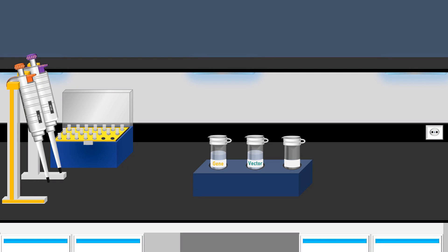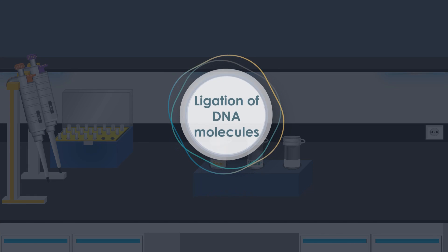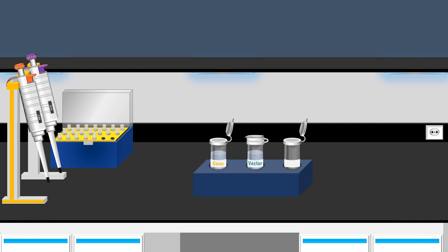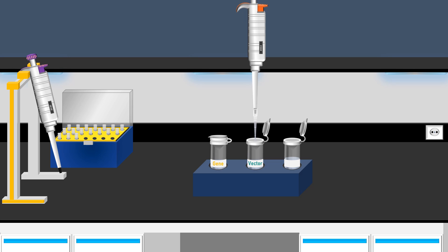After treatment with the restriction enzymes, the next step in the cloning process is the ligation of DNA molecules. For this purpose, the solution containing our treated gene is added into a new tube. Afterward, the plasmid vector solution is added to the gene solution.